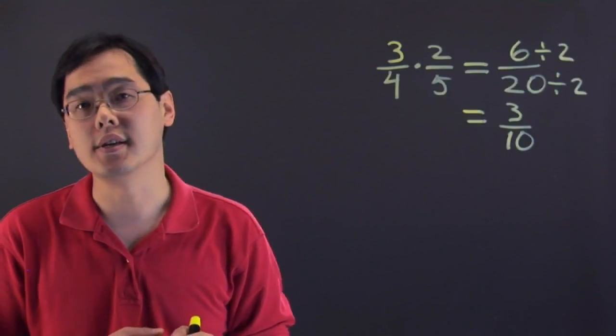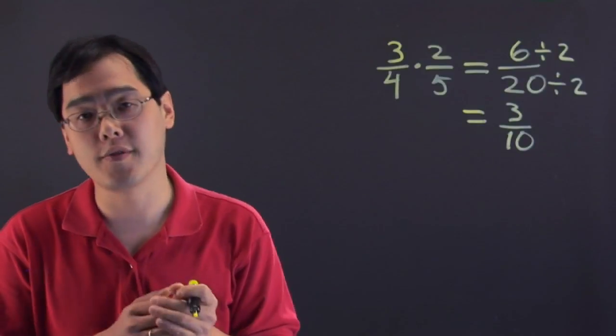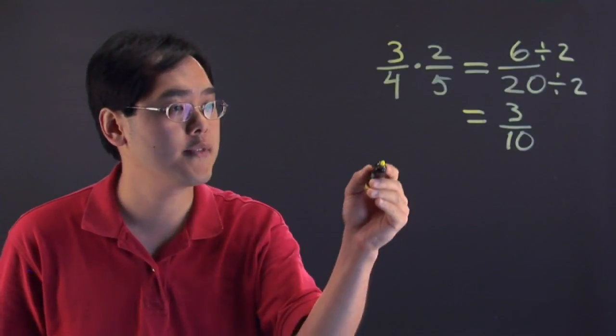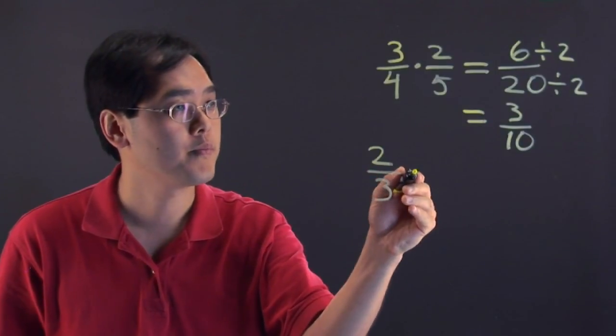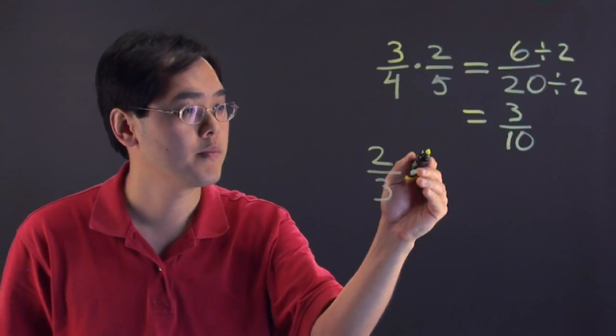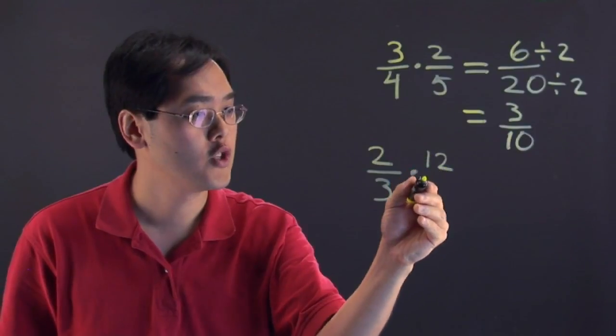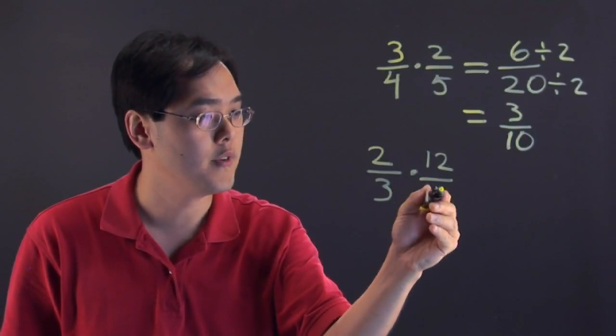Now the other approach is you can reduce prior to finishing the problem. So suppose you have something like 2 thirds times 12 fifteenths.